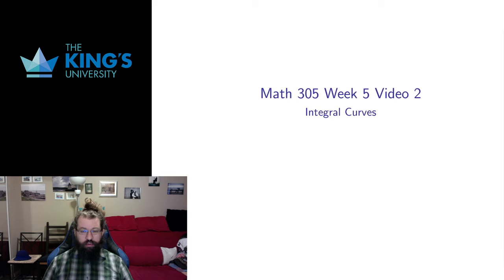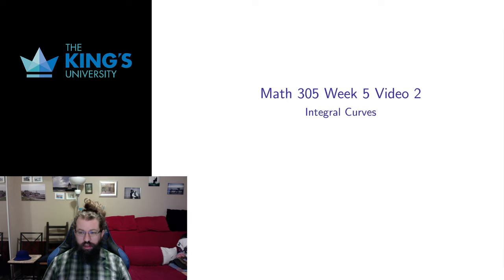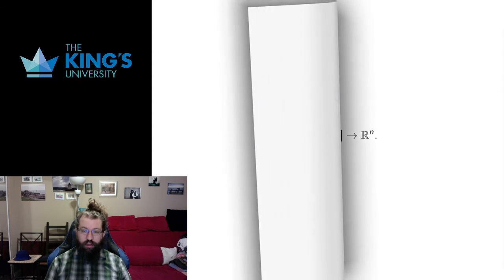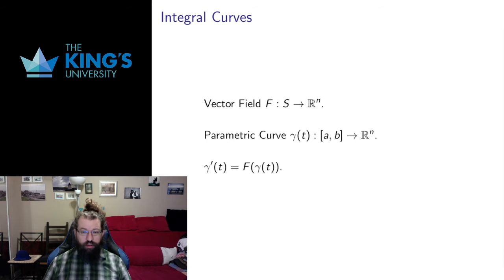Both of these questions — what happens to objects in these fields — are answered by paths, and paths are parametric curves. You should be able to ask what are the parametric curves associated to that vector field that describe the paths objects will take. I should be careful: these should be objects that start at rest. If objects have some initial velocity, their paths will be different depending on the interaction of their initial velocity and the effects of the vector field. These paths are going to be called integral curves.